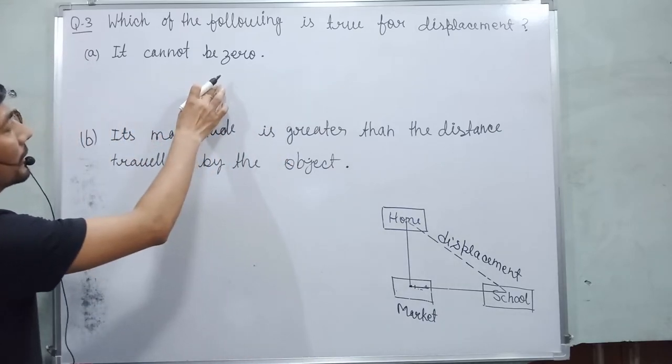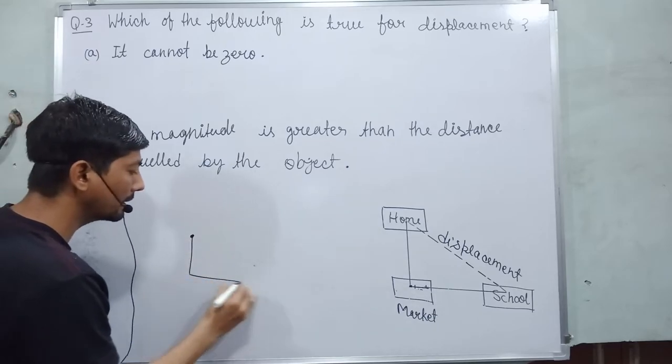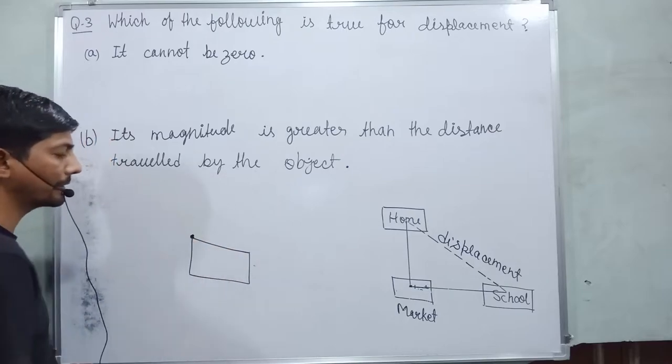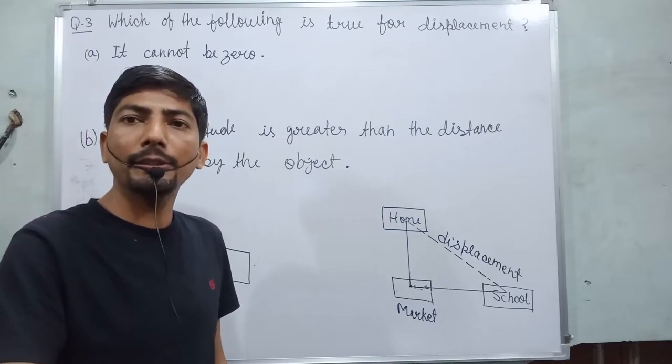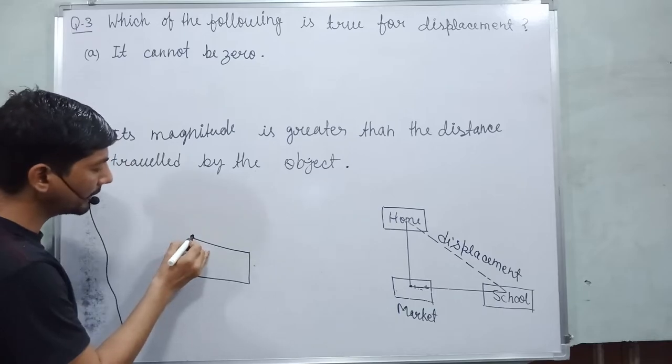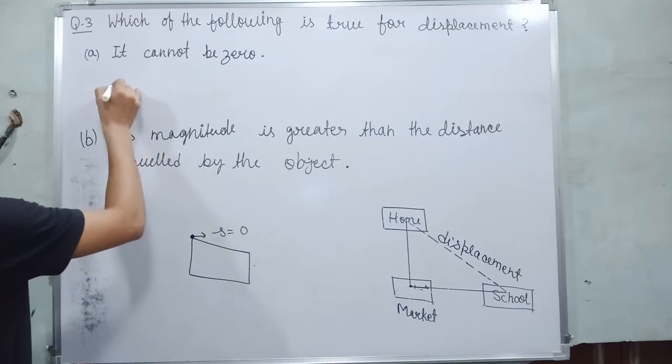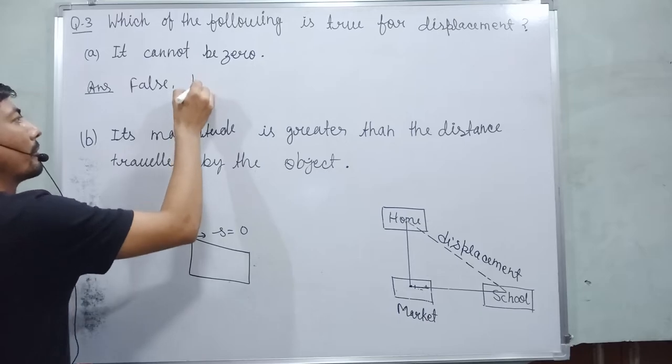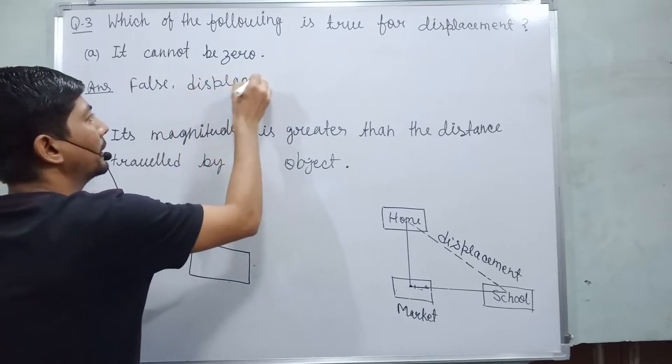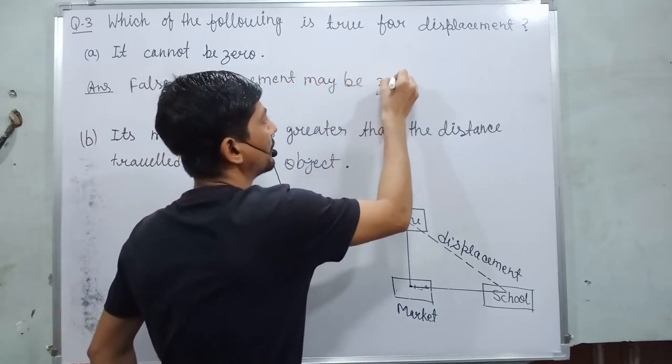So in this question, it cannot be zero is false option. Because if you start from this point and go towards this, after this, and come again at your starting point. If you initiate from your initial point and came back to the same point, you reached at same point. And in this case, we can say it may be zero. Our answer is false. Displacement may be zero.